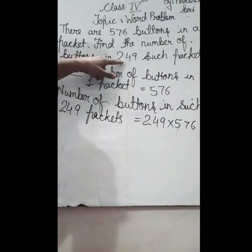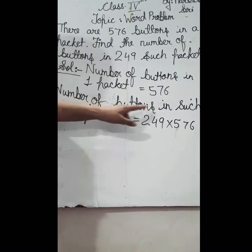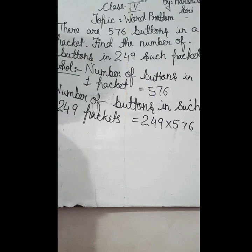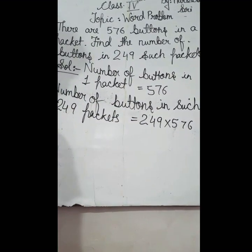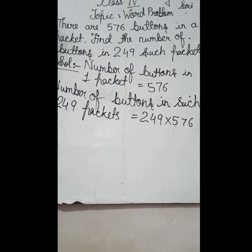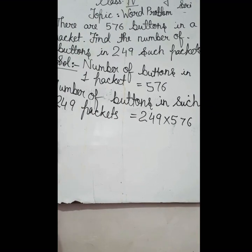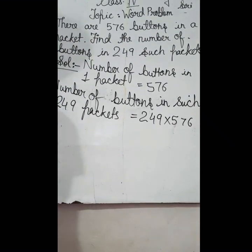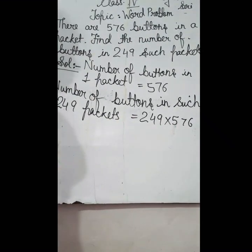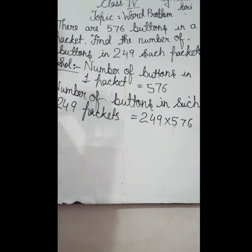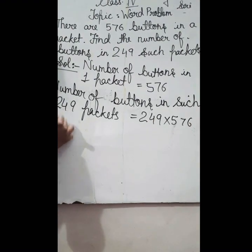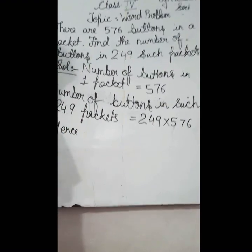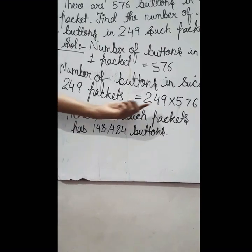अब हमने one की बात कर ली थी, one के बाद मुझे 249 की बात करनी है। Number of buttons in such 249 packets — अगर इसी तरह के 249 packets होंगी तो buttons इस number से multiply होगा। जब आप one से ज्यादा quantity की तरफ जाते हैं, तो वहाँ multiplication होता है। So, 249 को आप 576 से multiply कीजिए। You will write them in columns and multiply to get the answer.